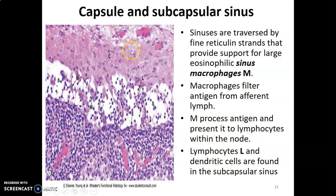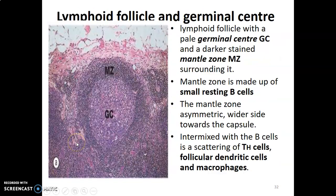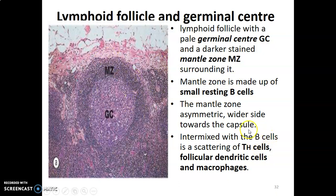Within the subcapsular space you find lymphocytes and dendritic cells before reaching the cortex. The outer cortex contains lymphoid follicles, each with an inner germinal center and an outer mantle zone. The germinal center is lightly stained while the mantle zone is darkly stained. The mantle zone contains small resting B cells and is wider on the side towards the capsule.